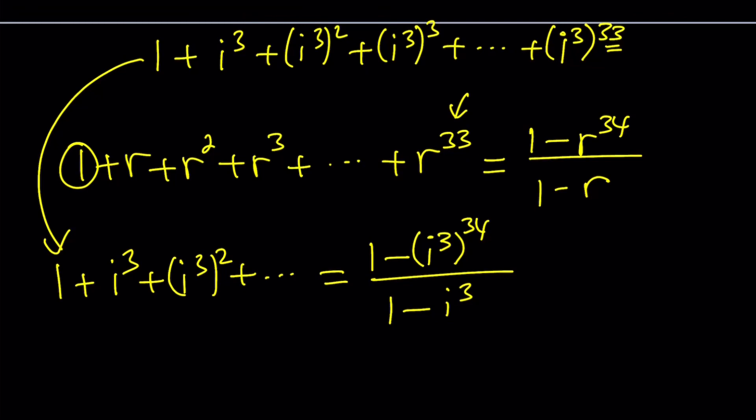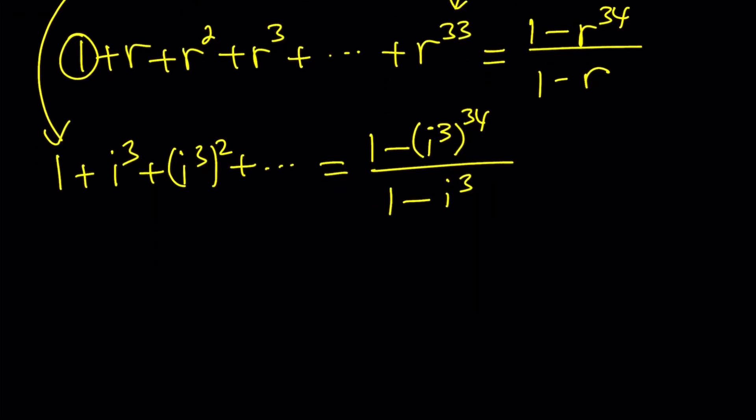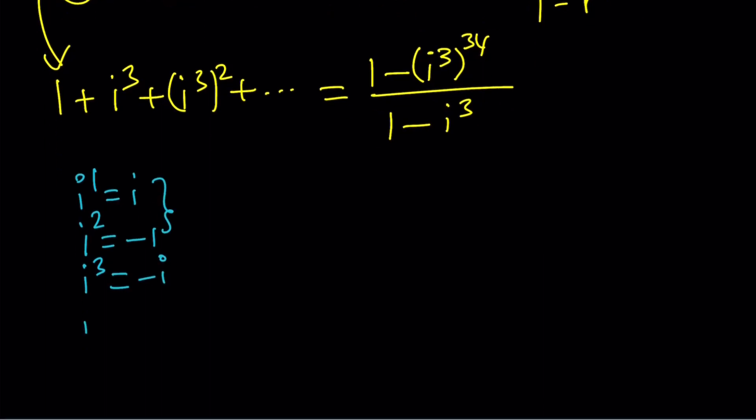If you know what i cubed is, the rest should be pretty easy. We talked about the first four powers: i to the power 1 is i, i to the second is negative 1 by definition, i to the third is the product of these two numbers which is negative i, and i to the fourth is i squared squared which is positive 1. This is where the cycle begins. i to the fifth is going to be the same as i to the first, so it's mod 4 in other words.